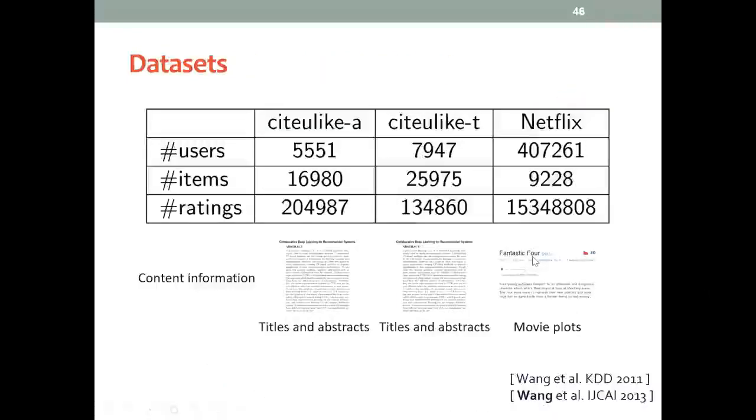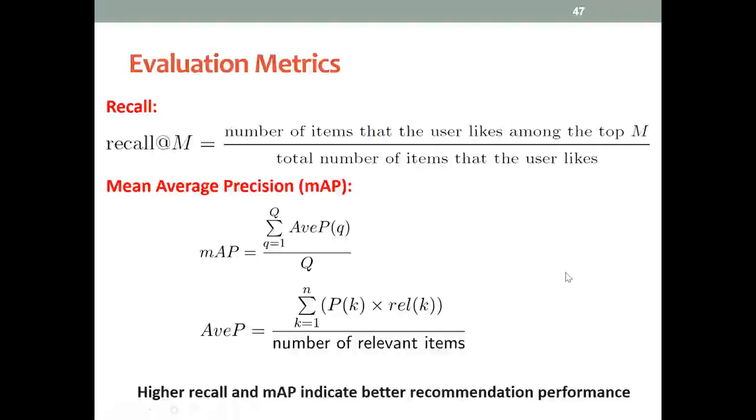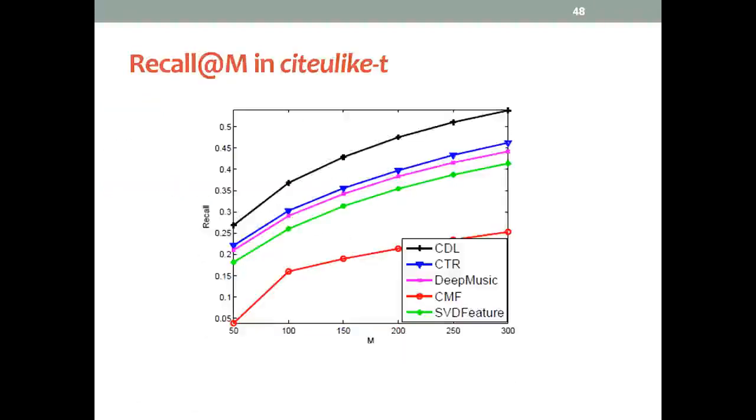In order to evaluate our methods, we use three datasets, two from CiteULike and one from Netflix. For CiteULike, we use titles and abstracts as the content. For Netflix, we manually crawl the movie plots from IMDB and use them as the content. We have two evaluation metrics, Recall and MAP. High Recall and MAP indicate better performance.